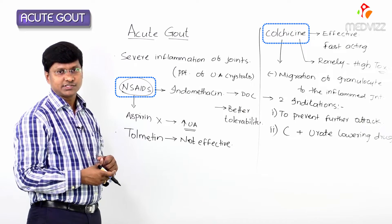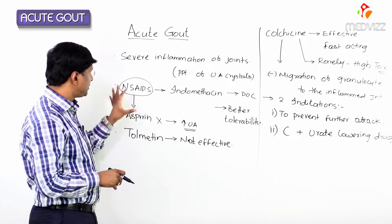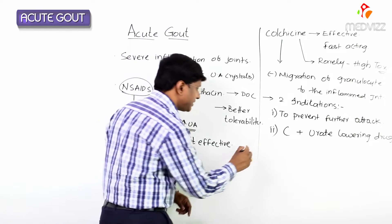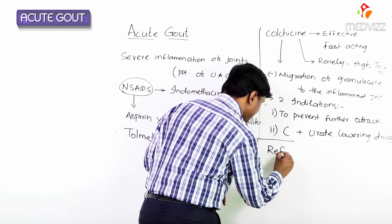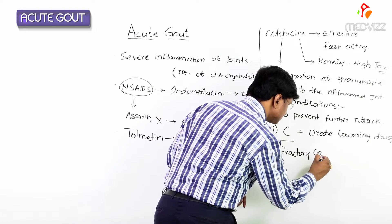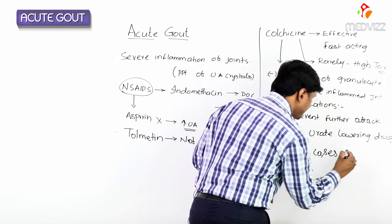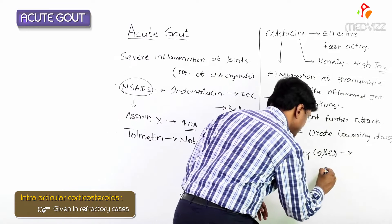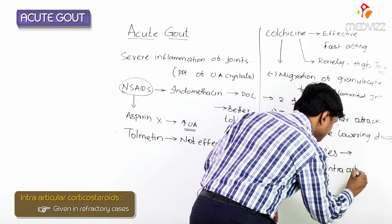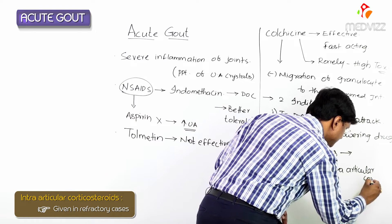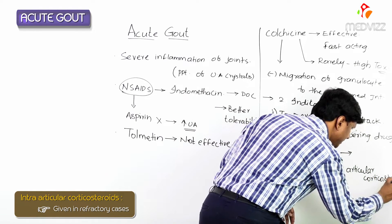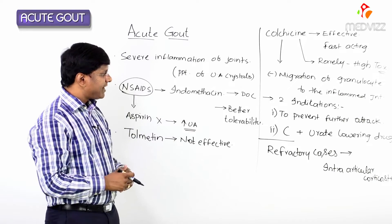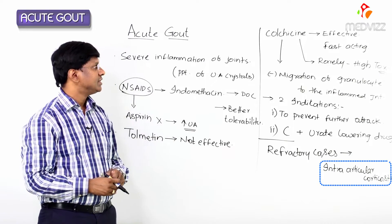NSAIDs are good drugs and colchicine is effective and fast acting, but not commonly used due to high toxicity. In refractory cases, where neither NSAIDs nor colchicine control the pain, what we give is intraarticular corticosteroids.